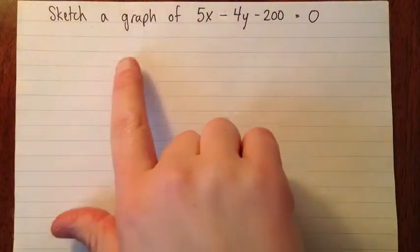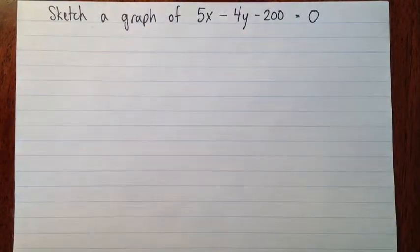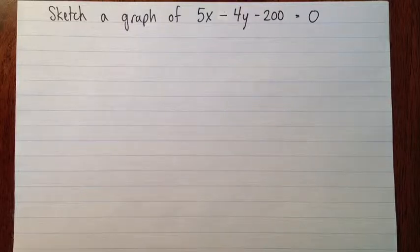So here we're asked to sketch a graph of 5x minus 4y minus 200 equals 0. Different methods are easiest to sketch graphs depending on what form of the equation you have. For example, in slope-intercept form, you find the y-intercept and then you use the slope to count up and over. If we've got an equation in general form, the easiest way to graph it is by finding the intercepts. And I'll show you why.